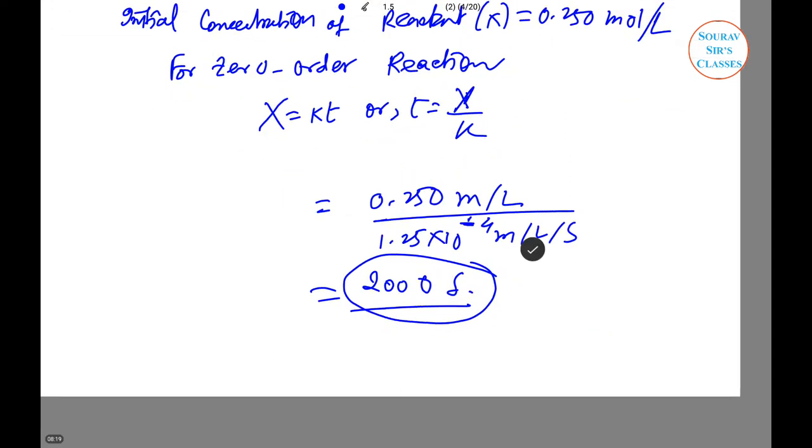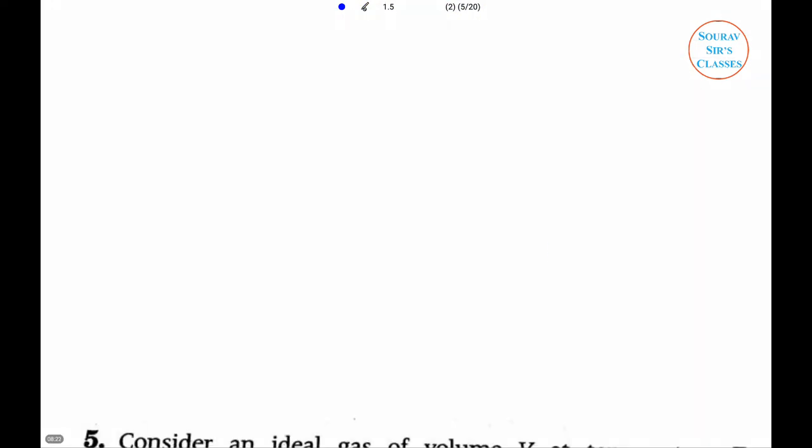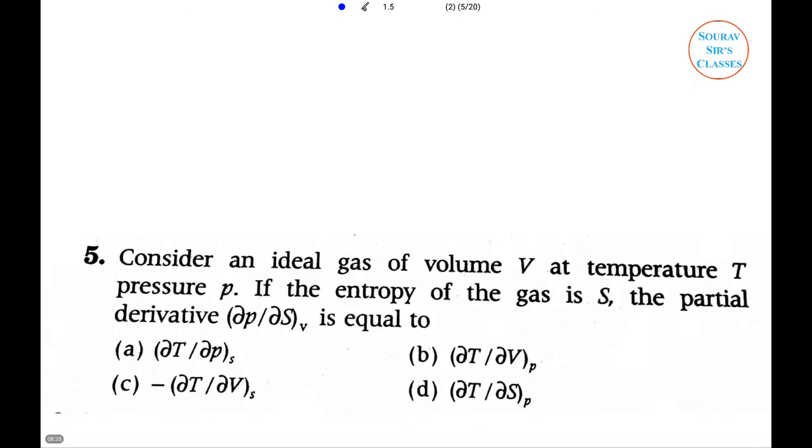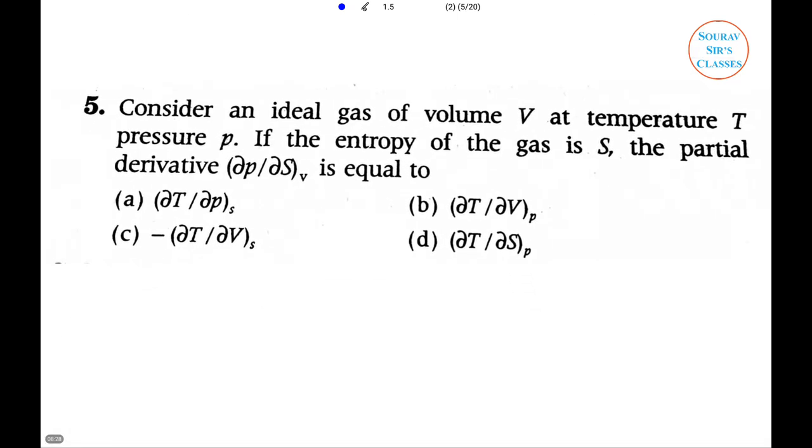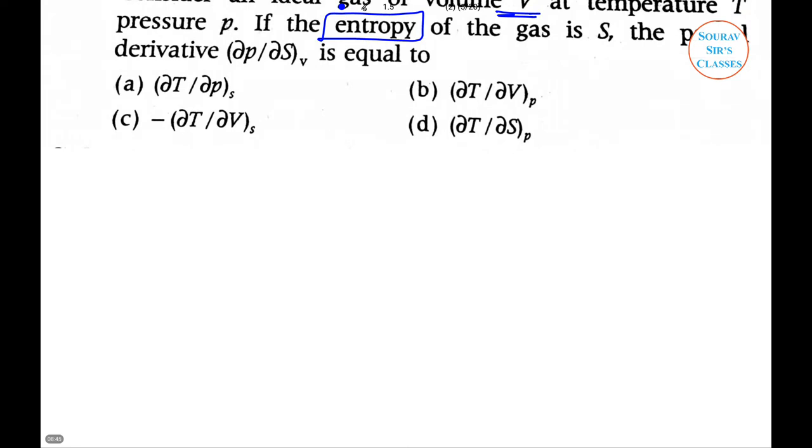Consider an ideal gas of volume V at temperature T and pressure P. If the entropy of the gas is S, what is the partial derivative (∂T/∂S)_V equal to? Let V equal volume, T equal temperature, P equal pressure, and S equal entropy.